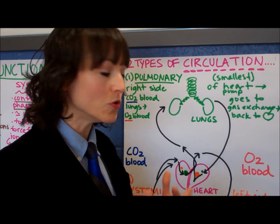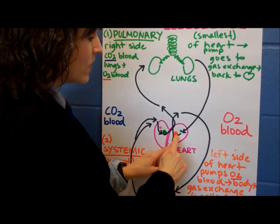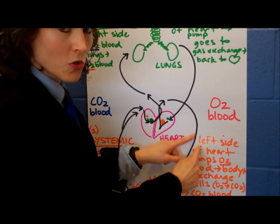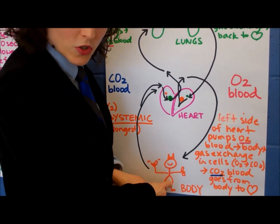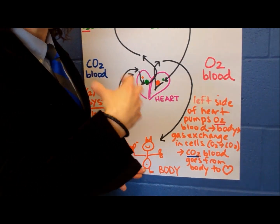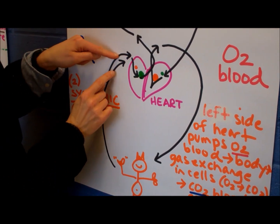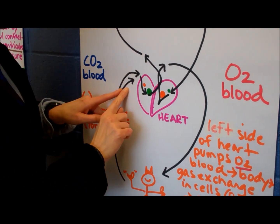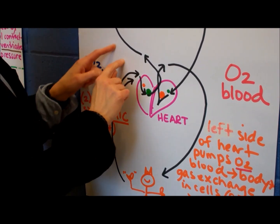As soon as the pulmonary circulation ends, the systemic circulation begins — it's a continual loop. The systemic circulation starts on the left side of the heart and goes toward the body, where oxygen is delivered to your tissues. The blood then picks up CO2, and there are two arrows here: one for the inferior vena cava and one for the superior vena cava, bringing blood back to the heart.